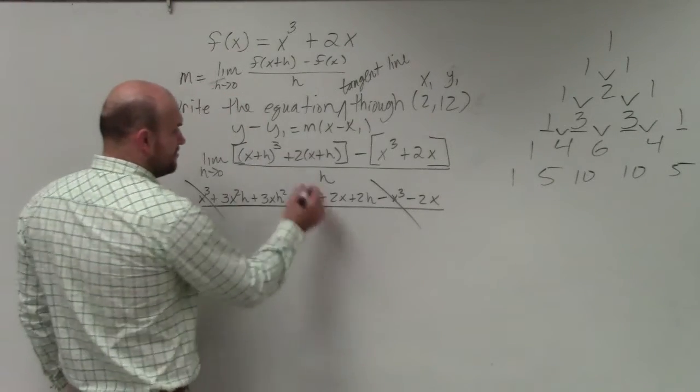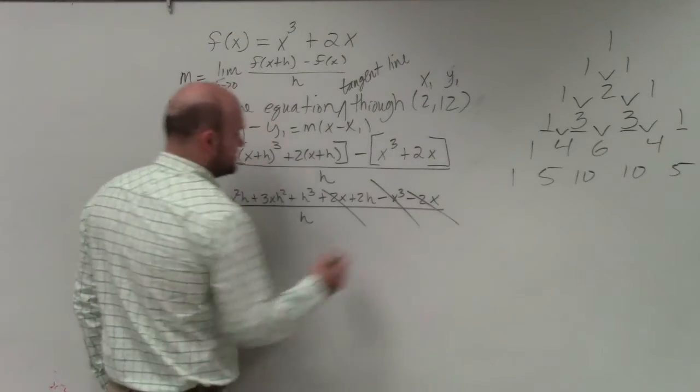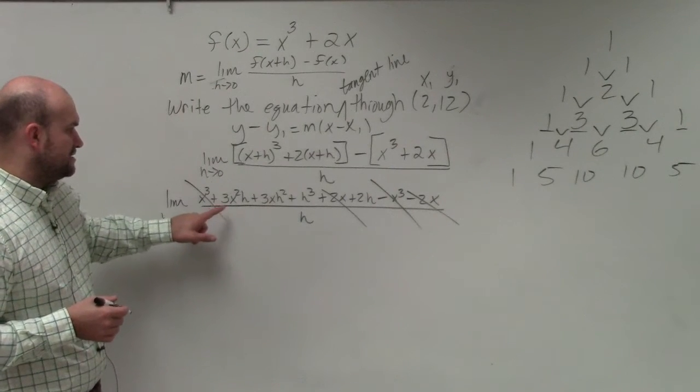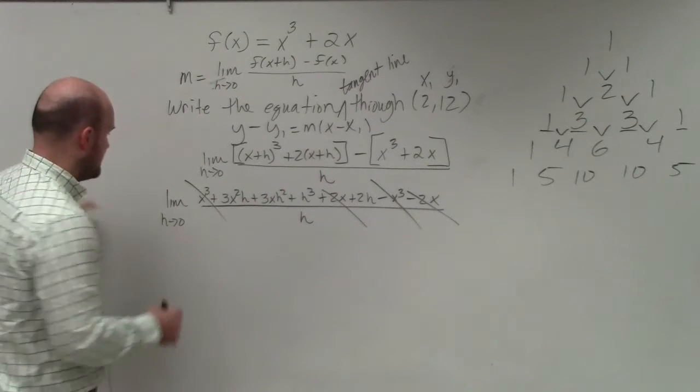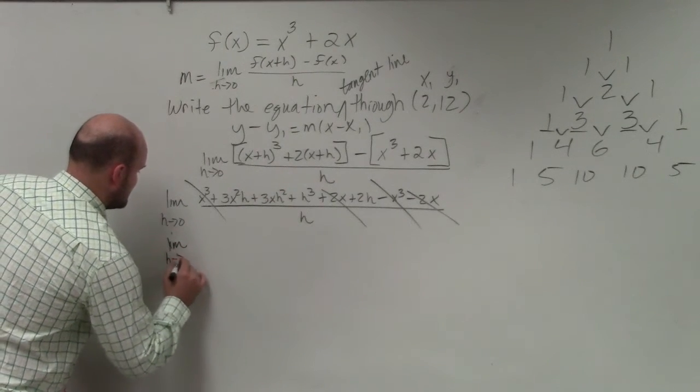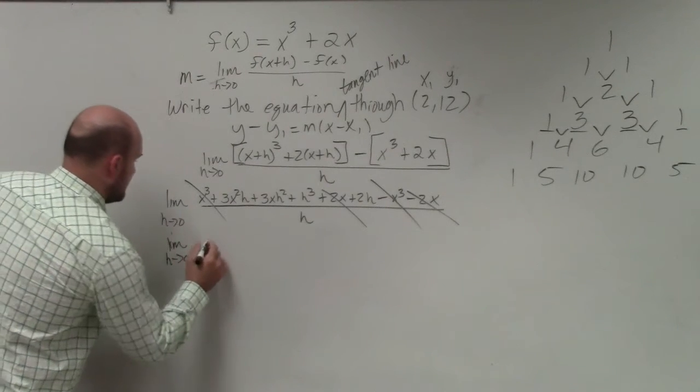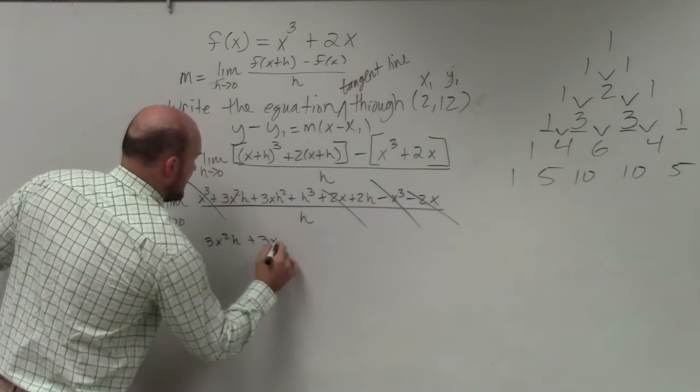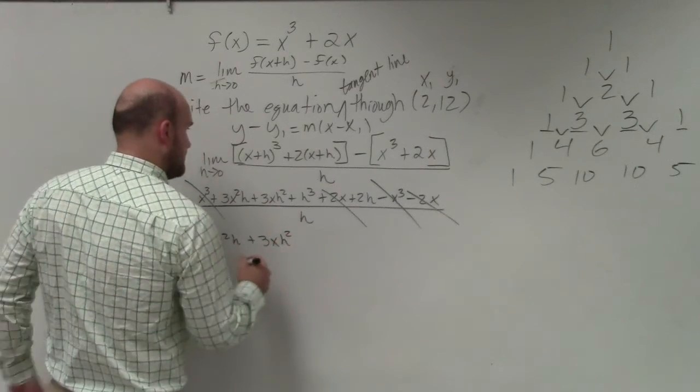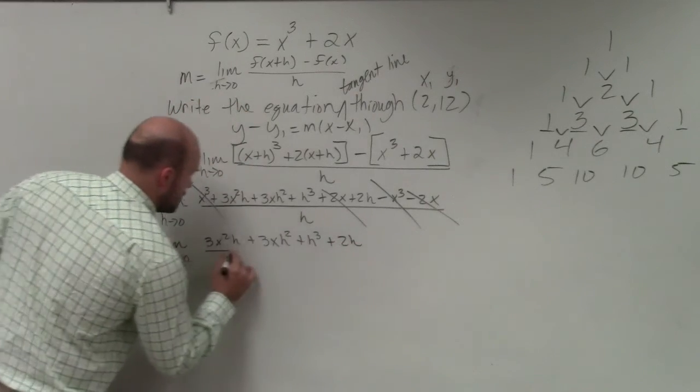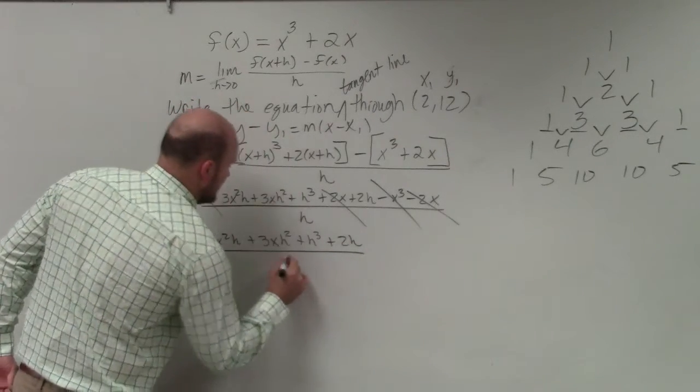I have a positive 2x and a minus a 2x. Those aren't like terms. Those aren't like terms. Those aren't like terms. So therefore, I can now rewrite this as the limit as h approaches 0 of 3x squared h plus 3x h squared plus h cubed plus 2h all over h.